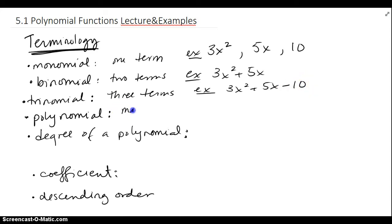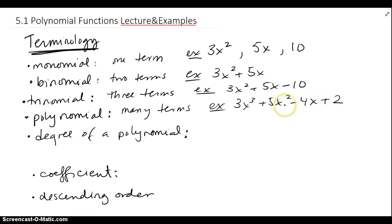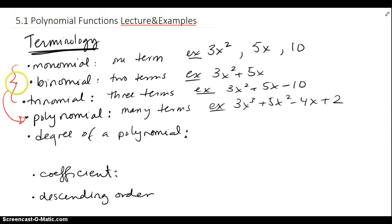A polynomial has many terms. For example, 3x cubed plus 5x squared minus 4x plus 2 has four terms — we tend to just call it a polynomial. All the previous cases — monomial, binomial, trinomial — are all special cases of a polynomial.